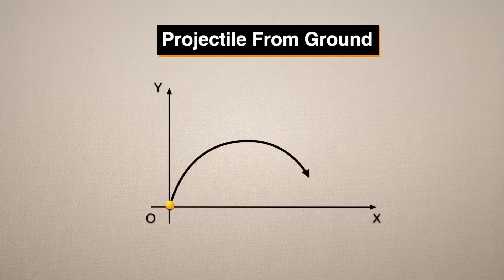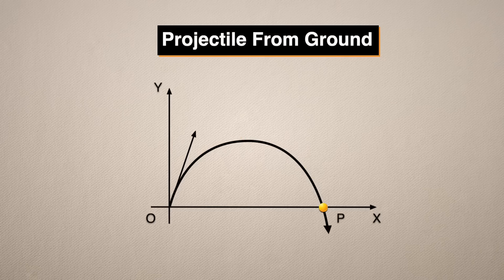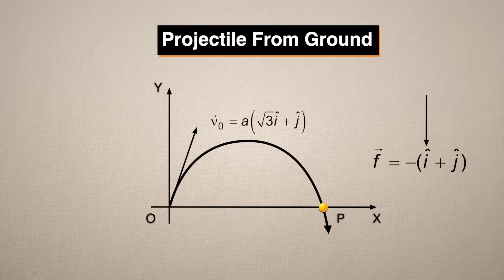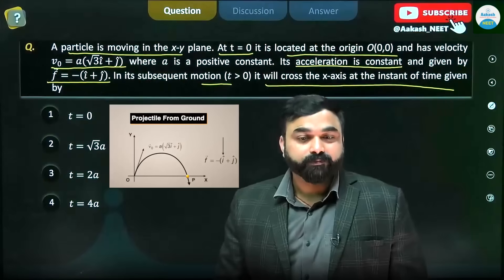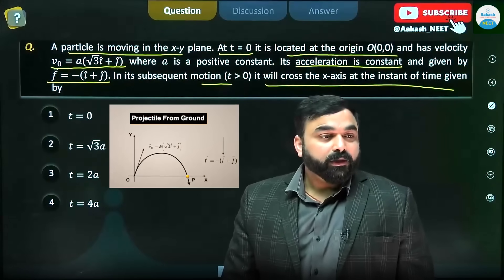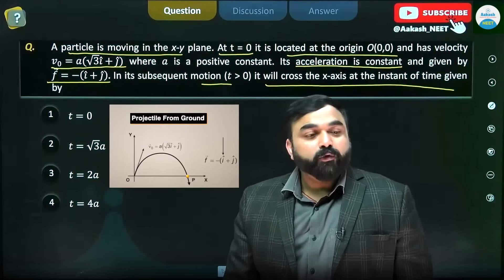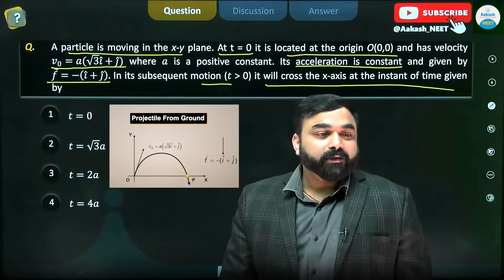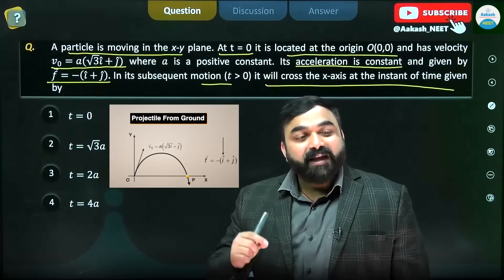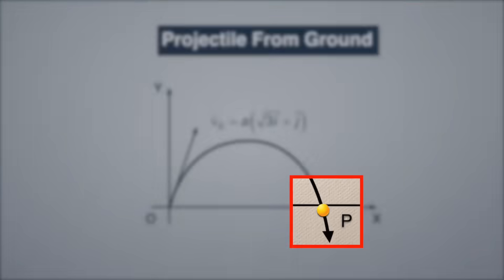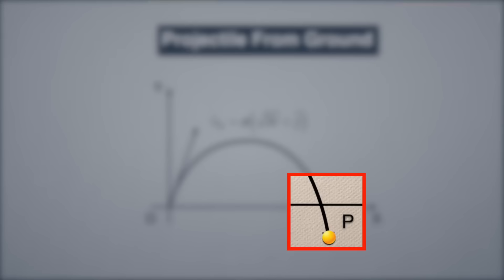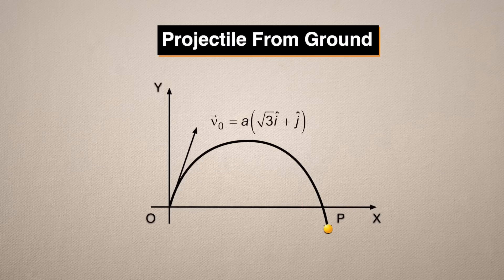A particle which has been projected from origin with this velocity, and the acceleration of that particle is this, and this acceleration is constant—this will not change. Now you have to comment regarding the correct option: at what time the particle will cross the x-axis?